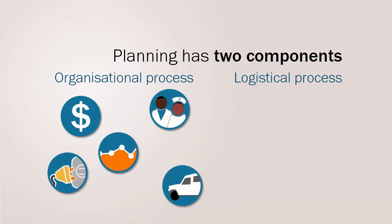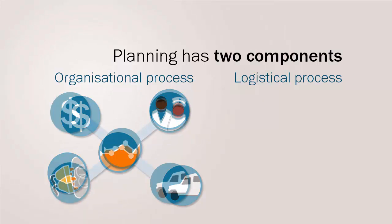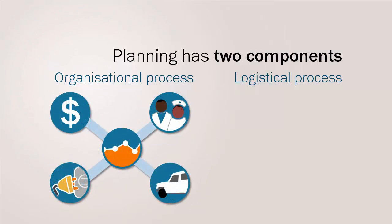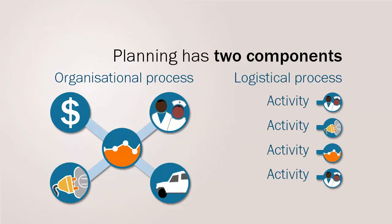In organizational process, we try to understand all the different interconnected components that influence our work. We then use these components to create a strategy or framework for change. The logical process details all the activities we need to carry out in order to achieve our desired change.